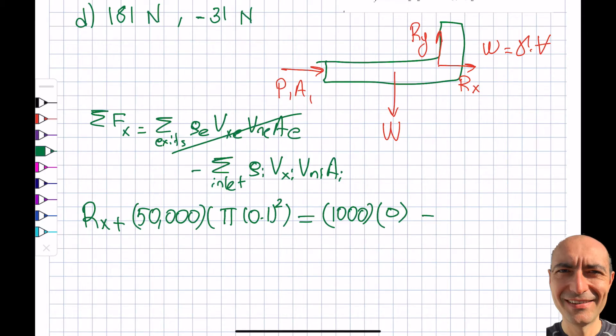Minus, I have 1000, Vx inlet. So looking at the inlet, inlet is this way. And I was given this to be 1, so 1 meter per second. Vx inlet, Vn inlet is 1, and the area is the same as π(0.1)².